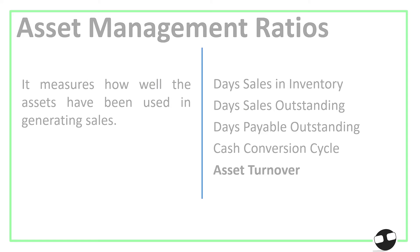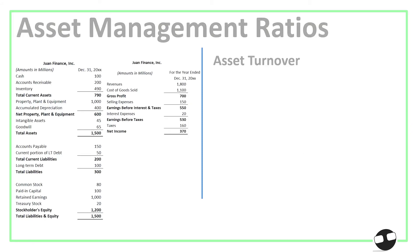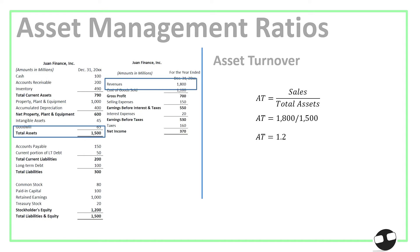The last ratio is Asset Turnover. It measures how well assets have been used in generating sales. The formula is sales divided by total assets, so that's 1,800 divided by 1,500, giving an asset turnover of 1.2 times — meaning for every 1 peso of assets, the company generated 1.2 pesos in sales.